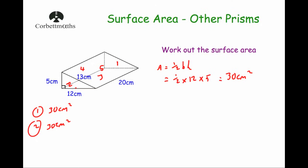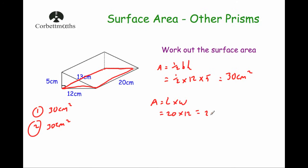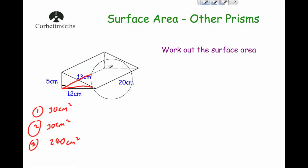The rectangle which is the base has a width of 12 centimeters and a length of 20 centimeters. Area equals length times width, so it's 20 times 12, which equals 240 centimeters squared. So face number three, the base, has an area of 240 centimeters squared.